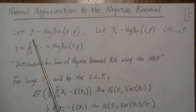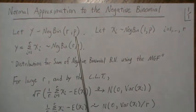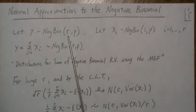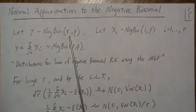Here we're going to let Y be a negative binomial with parameters r and p. p is the probability of an event and r is the number of events that we want to see before we stop sampling.